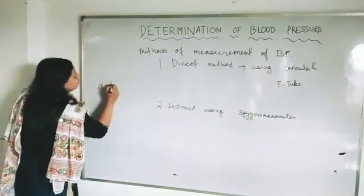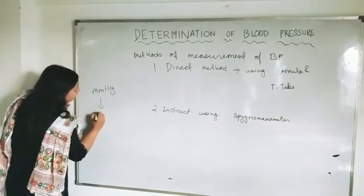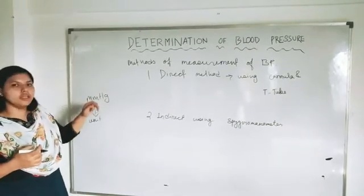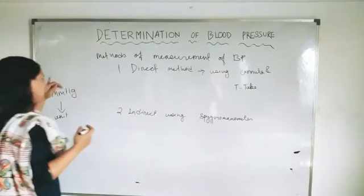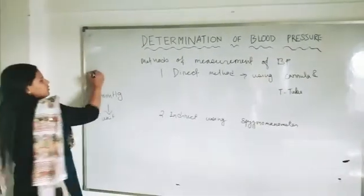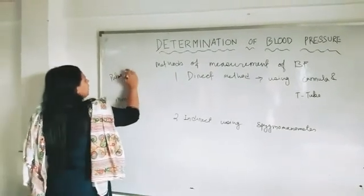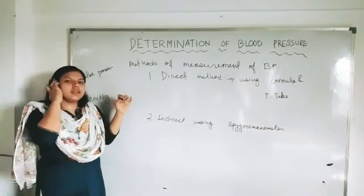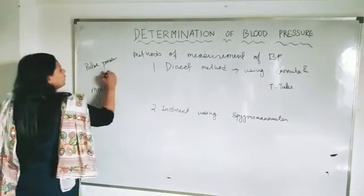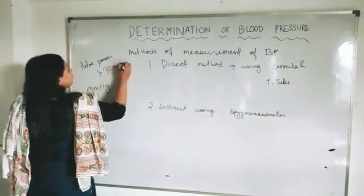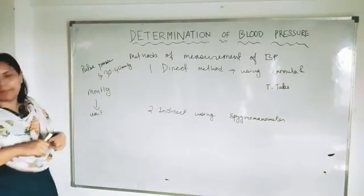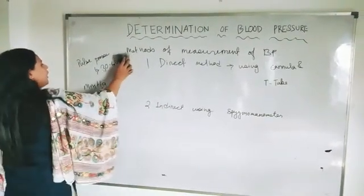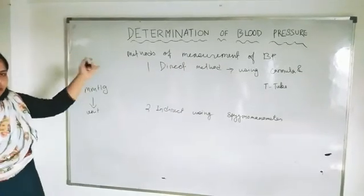The unit of blood pressure is mmHg — millimetres of mercury. That will be our unit to calculate blood pressure. There is also pulse pressure, which is the difference between the systolic and diastolic pressure in our body. The normal pulse pressure should be within 30 to 40 mmHg.